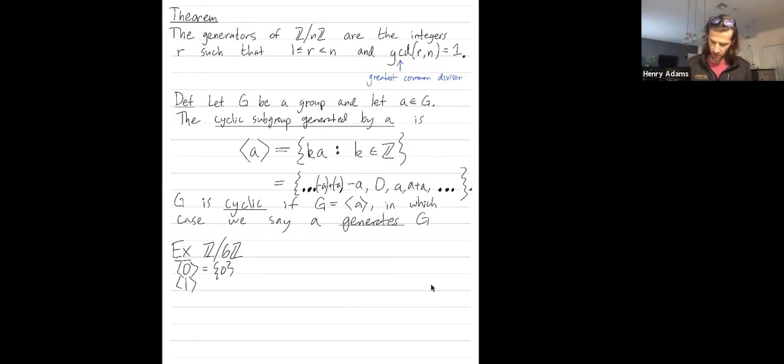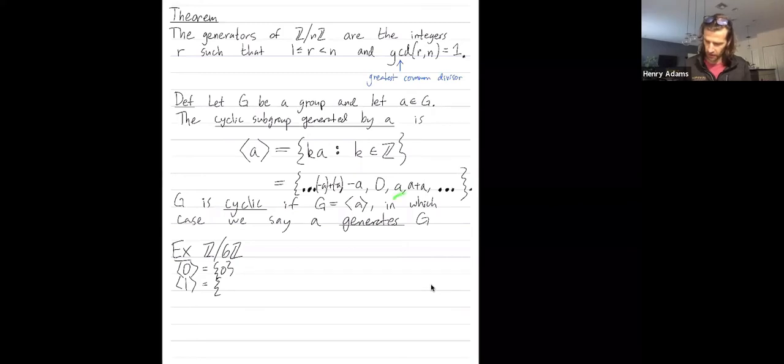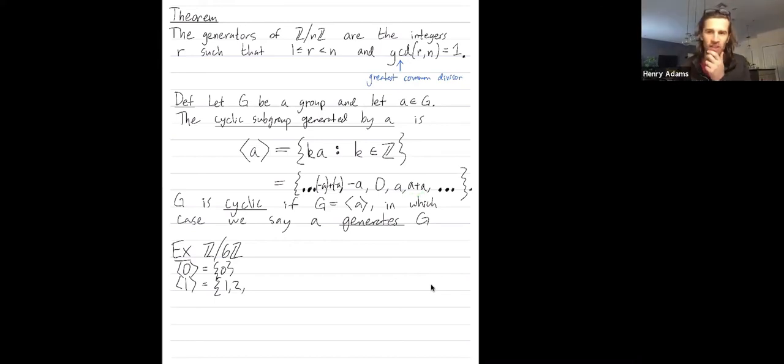Cyclic subgroup generated by one. I usually start with the element itself when I write down the subgroup. So really I'm starting here, I'm starting with A, which in this case is one. Then A plus A is one plus one, which is two. And then keep going. A plus A plus A is three. We get four, five, and then we get all the way up to six. But six mod six is zero.